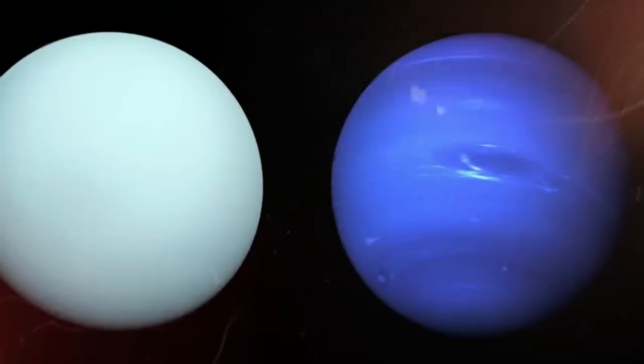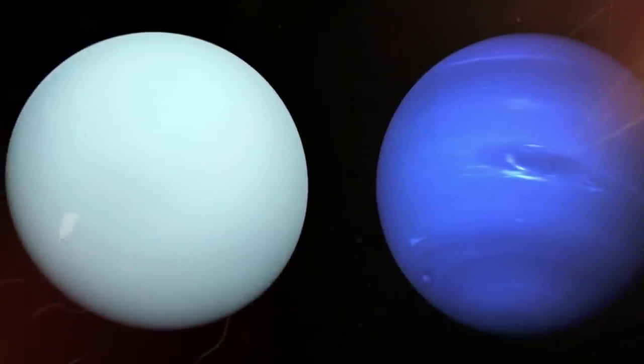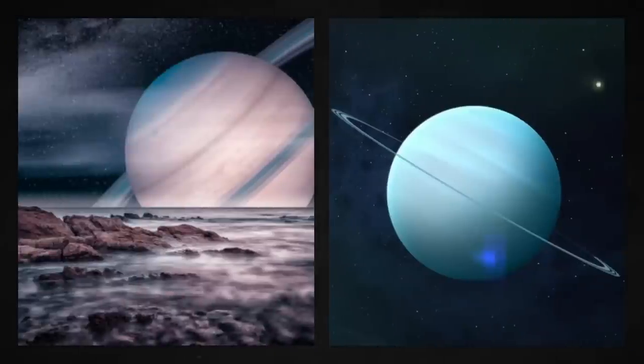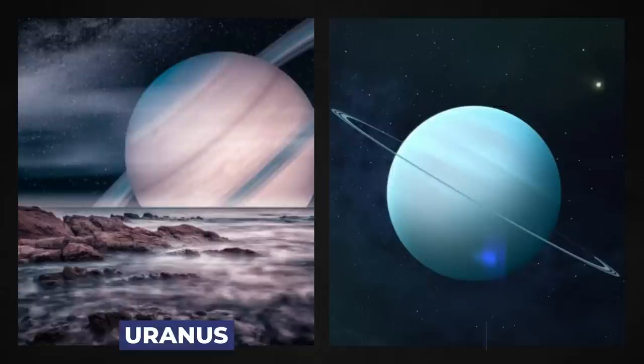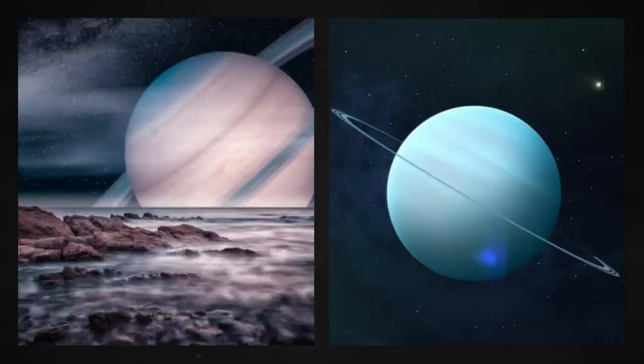When it comes to ice giants in our solar system, the list is pretty limited. There are only two members on that list, Uranus and Neptune. Even though these two planets are called ice giants, they are not exactly floating balls of ice.